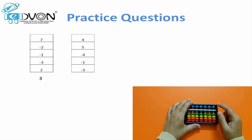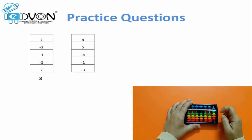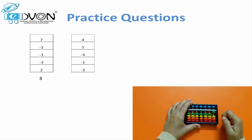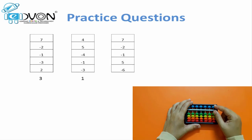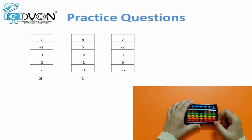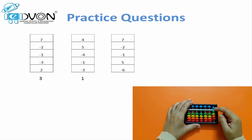Make your abacus 0. Next question: 4, plus 5, minus 4, minus 1, minus 3. Answer: 1. Make your abacus 0. Next question: 7, minus 2, minus 1, plus 5, minus 6. Answer: 3.